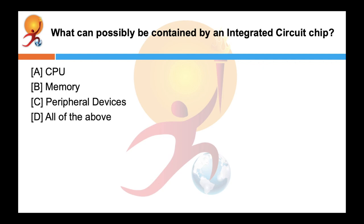What can possibly be contained in an integrated circuit chip? Correct answer is all of the above. Most modern microprocessors are usually contained in a single integrated circuit chip that contains a CPU, memory, peripheral interfaces and even other components of the computer. These are usually called the systems on a chip.